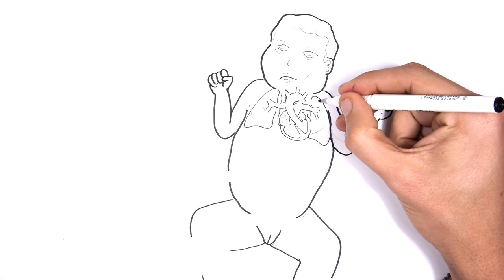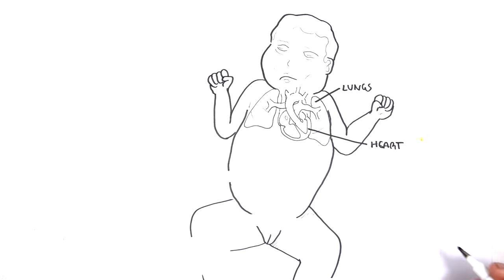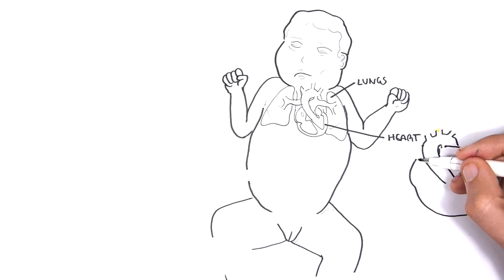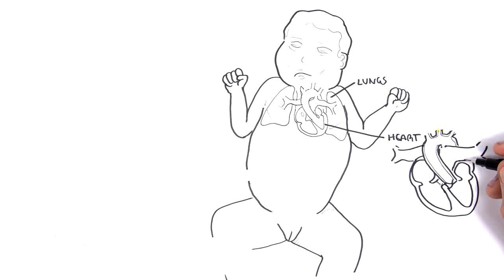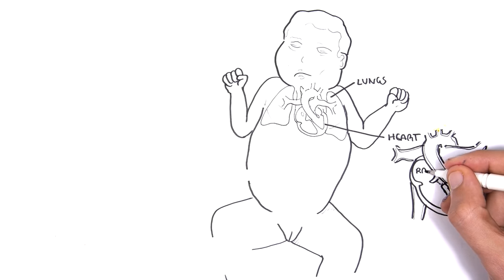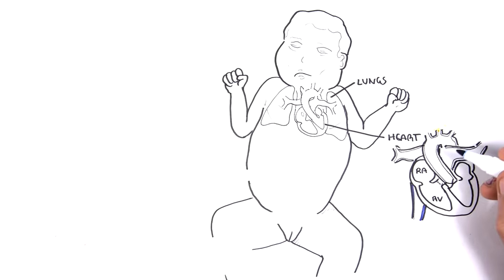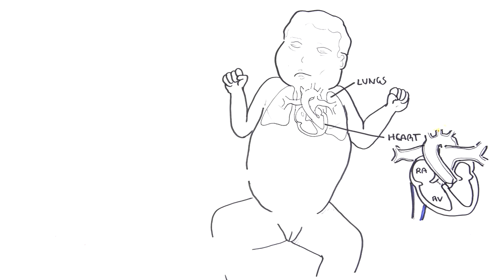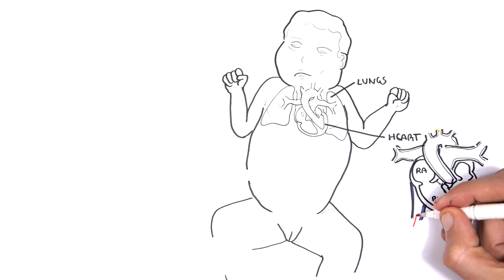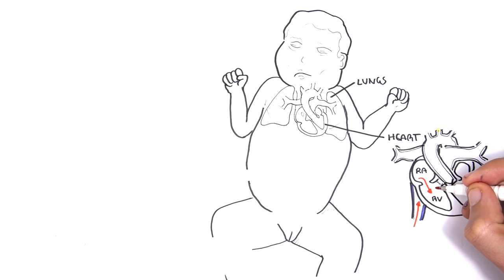Now let us focus on fetal circulation. Here is a fetus and its lungs and heart. Let's zoom in and focus on the heart. The heart has four chambers. The right consists of the right atrium and right ventricle. The right side of the heart is responsible for pumping blood into the lungs. Blood returns to the heart, to the right side, via veins — here in blue — and will enter the right atrium and then the right ventricle before being pumped by the heart into the lungs.